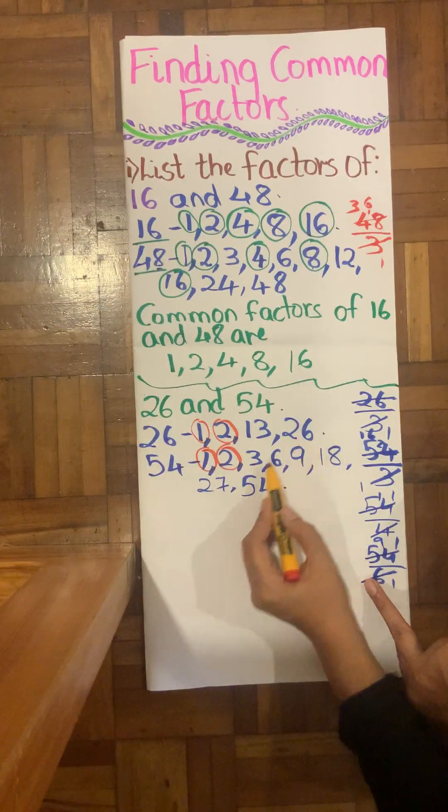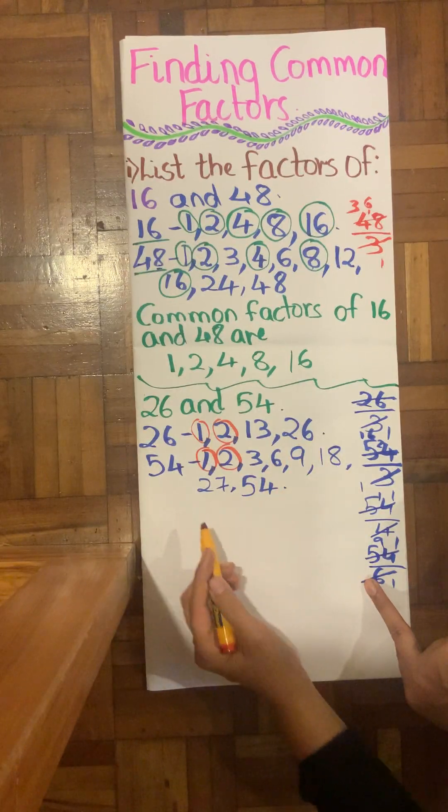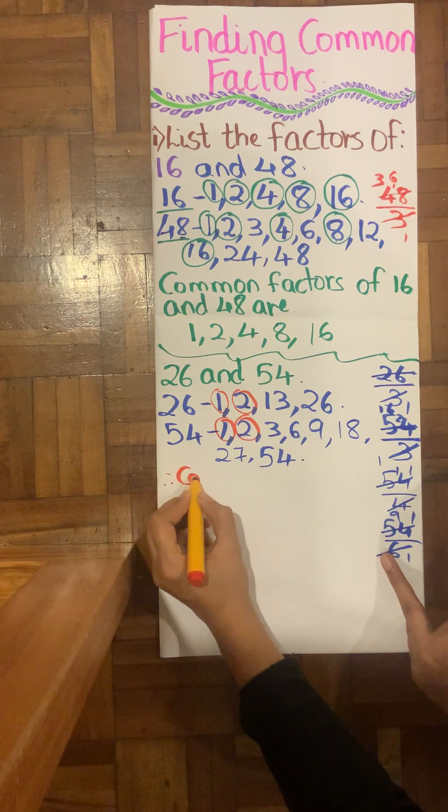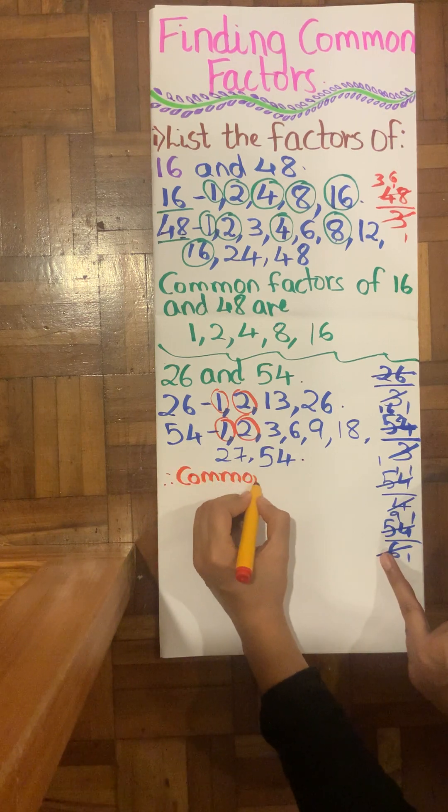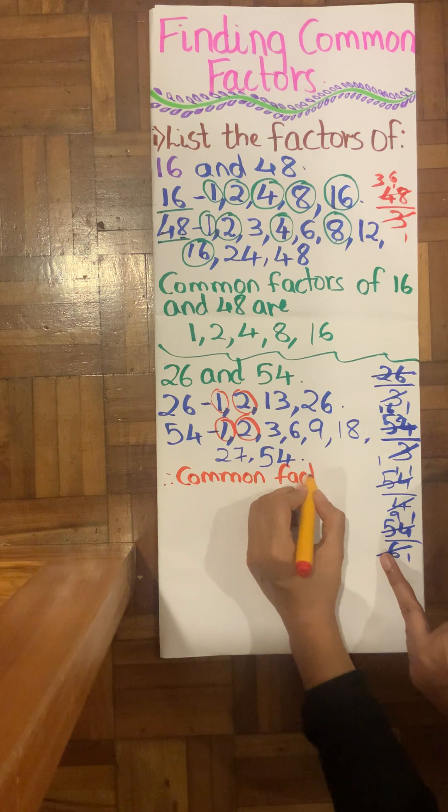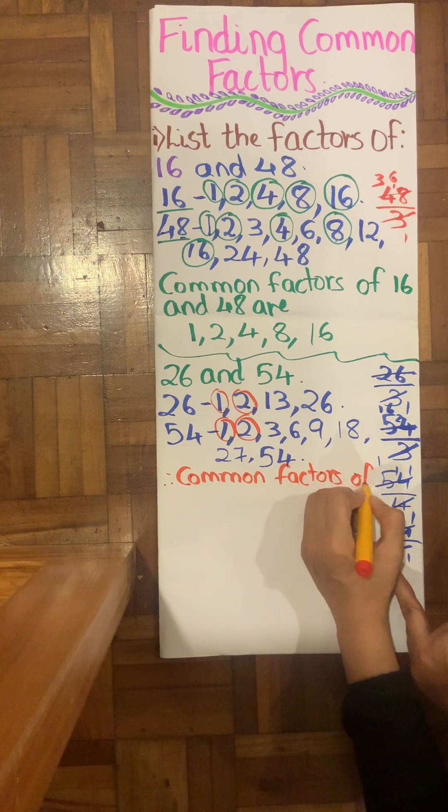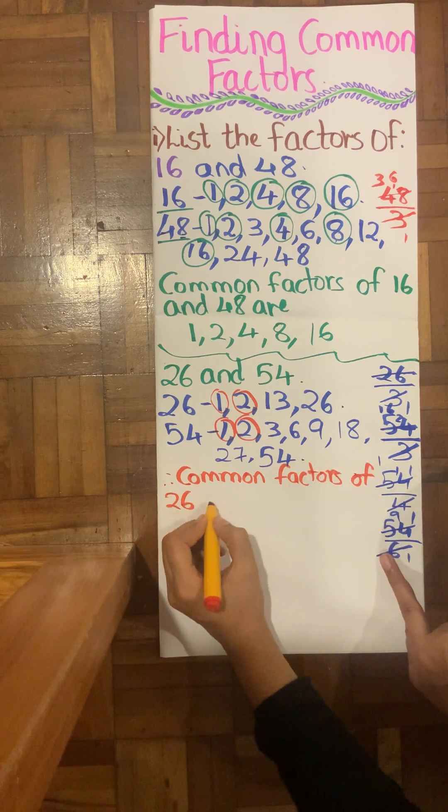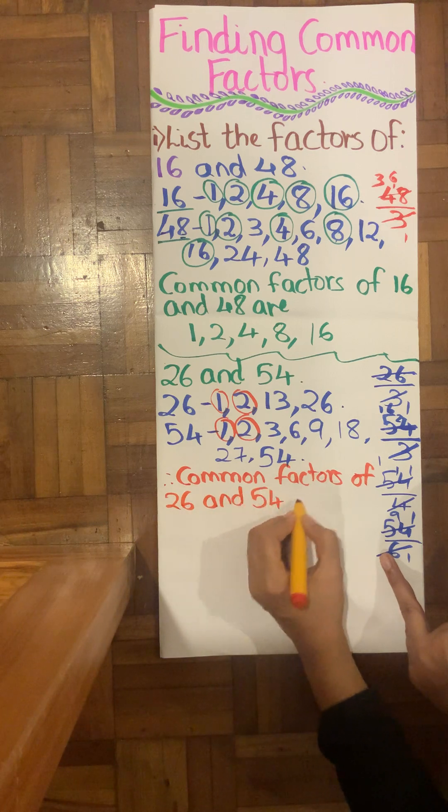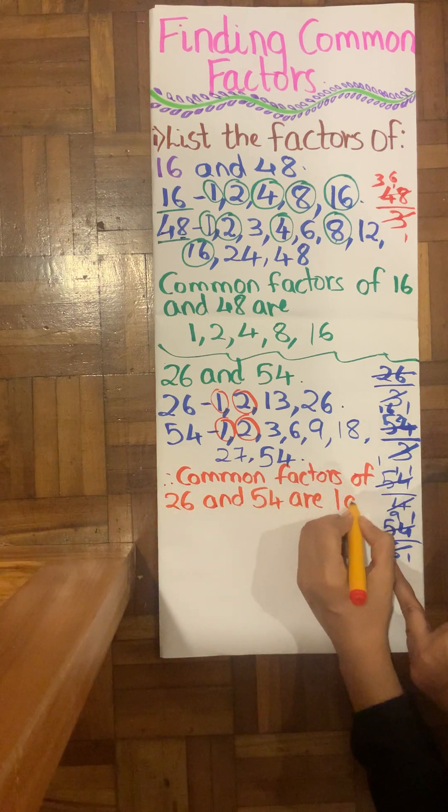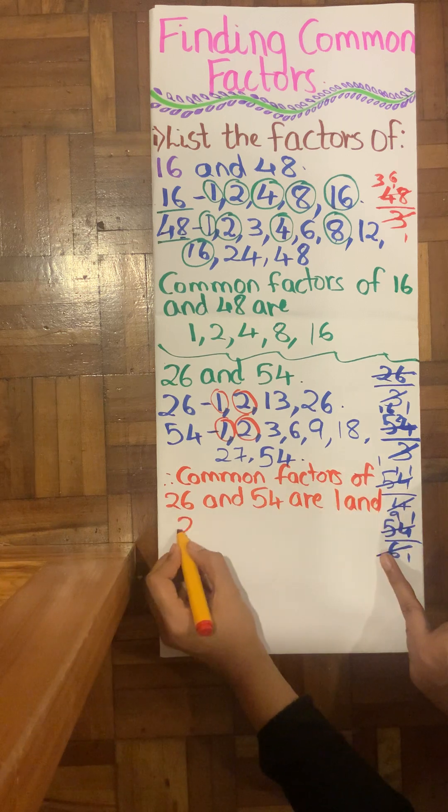Is 26 here? No. Therefore common factors of 26 and 54 are 1 and 2.